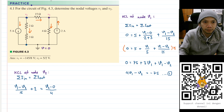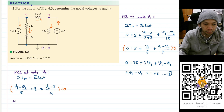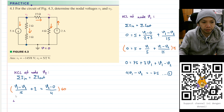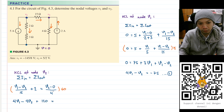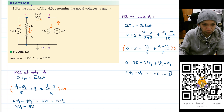To remove the denominators, we multiply both sides by 60. The 15 and 60 cancel to give 4, so we have: 4·V1 minus 4·V2 plus 120 equals 15·V2. Rearranging: 4·V1 minus 19·V2 equals minus 120. Let's save this as equation number two.